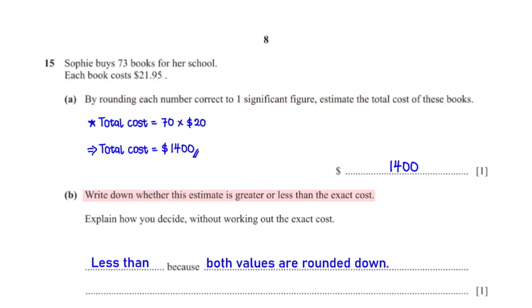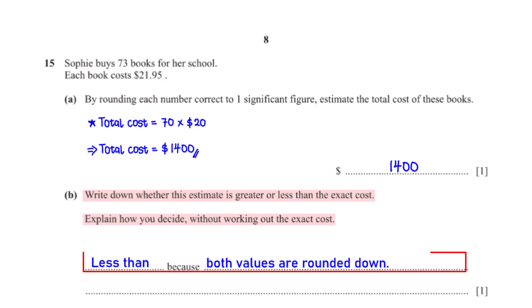Write down whether this estimate is greater or less than the exact cost. Explain how you decide, without working out the exact cost. The estimate is less than the exact cost because both values used to calculate the estimate are rounded down.